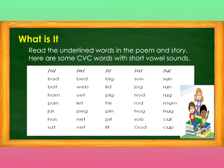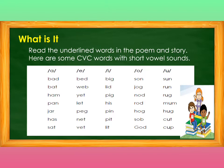Moving on to the I sound: big, lid, pig, his, fin, pit, lit. In the O sound, we have son, jog, not, rot, hug, sob, got. And last, the U sound: son, run, rug, mom, hug, cut, cup. Fantastic!